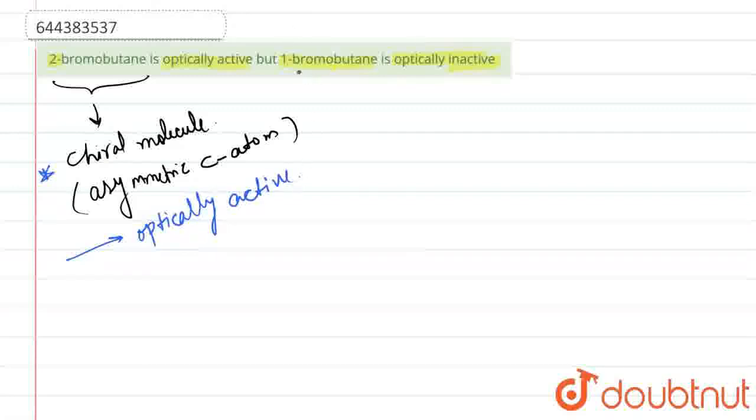And now, whereas in case of 1-bromobutane, it is an achiral molecule. As it does not contain any asymmetric carbon atom, therefore it is optically inactive.